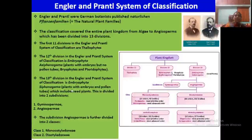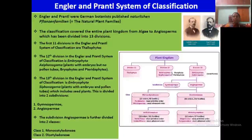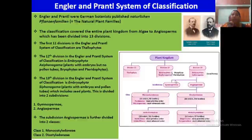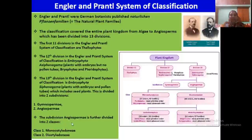In division 13 of Engler and Prantl's system, embryophytes are divided into two groups — seed plants: Gymnospermae and Angiospermae. Division 12 includes embryophyte and pteridophyte. The subdivision Angiospermae is again divided into two classes: monocotyledons and dicotyledons. This is the system by Engler and Prantl — dividing the plant kingdom into 13 divisions, with the first 10 covering thalophytes and lower groups.